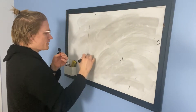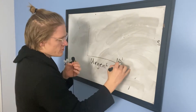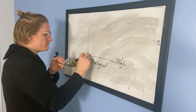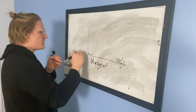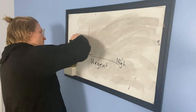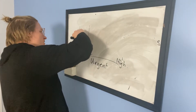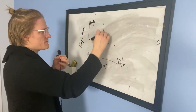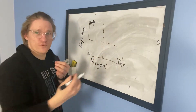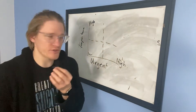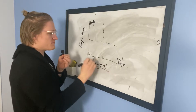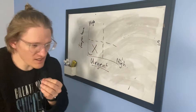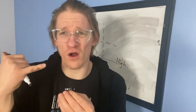Now, to frame this strategy, I use something called the Eisenhower Matrix. You have high urgency on one axis and low urgency on the other, and high importance versus low importance on the other axis. This gives you a matrix of four different quadrants.